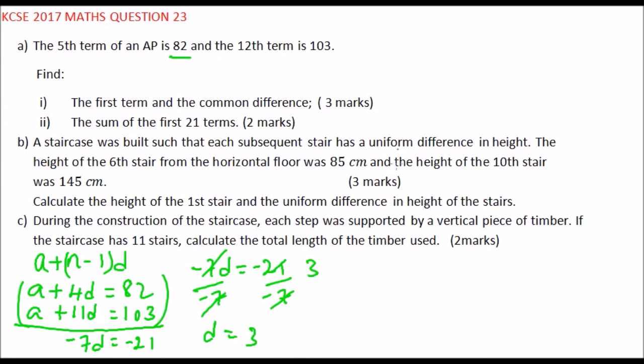Having obtained our D, then we substitute D in this equation to be able to get A. So A plus 4 multiplied by 3 is equal to 82. A is equal to 82, 4 times 3 is 12. It goes to the other side, it becomes minus. So A is equal to 70. The first term A is equal to 70, and our common difference D is equal to 3.